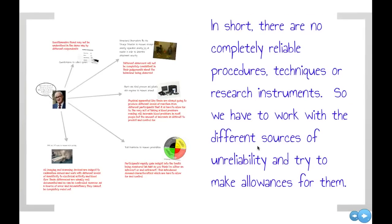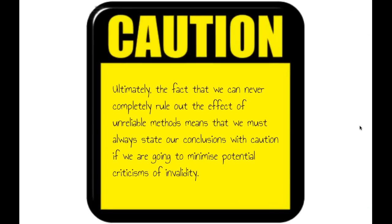So there's a bunch of different ways in which we can be unreliable. There's no completely reliable procedures or techniques for us. The research instruments aren't entirely reliable. We've got to work with the different sources of unreliability and try to make allowances for them. Ultimately, the fact that we can never completely rule out the effect of unreliable methods means that we've got to be cautious. We always state our conclusions with caution.